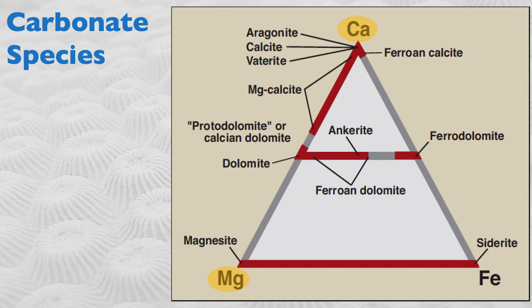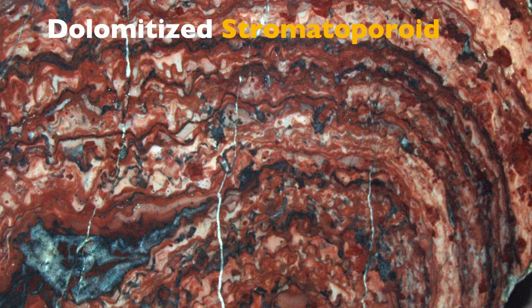There's another very important mineral: one where you have substitution of calcium by magnesium, but unlike high-mag calcite, you have an almost perfect 50-50 substitution of the two metals. That is known as dolomite. Dolomites are very common in the rock record, but not very common in sediments. It is an extremely important mineral for reservoirs. This is a beautiful example of a stromatoporoid — an organism similar to corals but much older — that was dolomitized, which is why you have this beautiful red color.